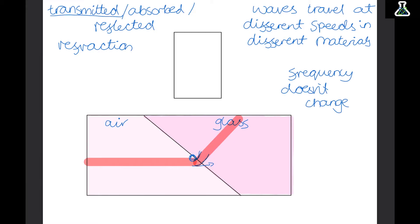We can draw diagrams to show refraction happening. We can draw the wave coming in to the new material and then the change of direction. There are two angles that we can measure: the angle of incidence, which is just the angle that the wave enters the new material, and the angle of refraction, which is how much the wave has changed direction.